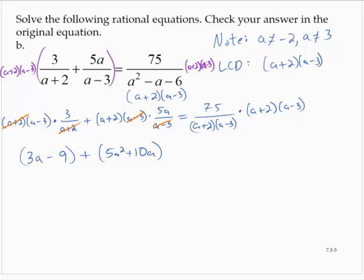On the right-hand side, the a plus 2s reduce and the a minus 3s reduce. So the right-hand side is just 75.